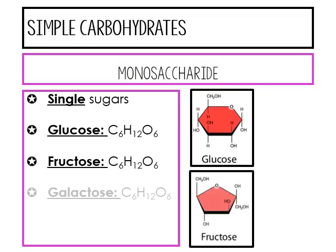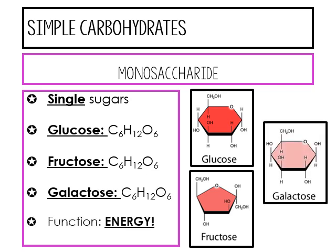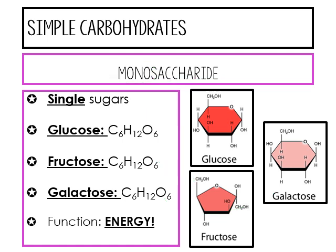Simple carbohydrates are called monosaccharides. If you tear the word apart, mono means one or single, and saccharide means sugar. So these are all single sugars. We have glucose, with the formula C6H12O6 — there's that one-to-two-to-one ratio. Ironically, fructose and galactose have the same formula, but if you look at images, glucose, fructose, and galactose all have different configurations. That makes a big difference in their purpose. They are all used for energy.